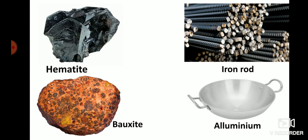Here children, you can see the picture of hematite, which is the ore of iron from which iron rods are made. This is bauxite, from which aluminium is made.